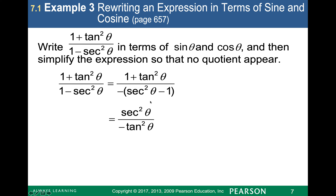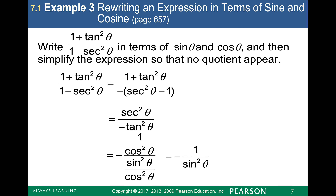I've taken tangent squared equals secant squared theta minus 1 and added 1 to both sides to get secant squared. Once I've reduced it algebraically, I replace terms with their sine and cosine counterparts — tangent is sine over cosine, and secant is 1 over cosine theta. That simplifies to negative 1 over sine squared theta. If I don't want a quotient, that equals negative cosecant squared theta.